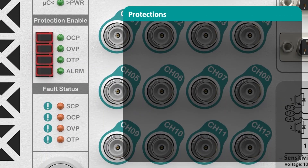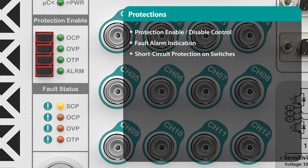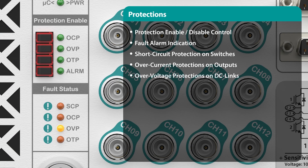If fireworks in the Power Electronics Lab gets you excited, you can always turn off the built-in hardware protections — this is also required by some topologies and loads. The PE Lab has by default short-circuit protection on all switches, overcurrent protection on outputs, overvoltage protection on DC links, and overtemperature protection on the power modules inside the PE Lab.